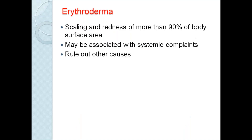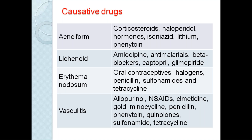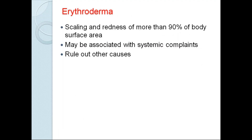Coming to erythroderma — any condition involving 90% of the body surface area is called erythroderma. There will be scaling and redness, associated with systemic complaints like fever, intolerance to cold, and lymphadenopathy. We have to rule out all other conditions and do all routine blood tests. This is a typical picture of erythroderma — sheets of redness and scaling, the entire body is red with sheets of scales present, and edema is also present.